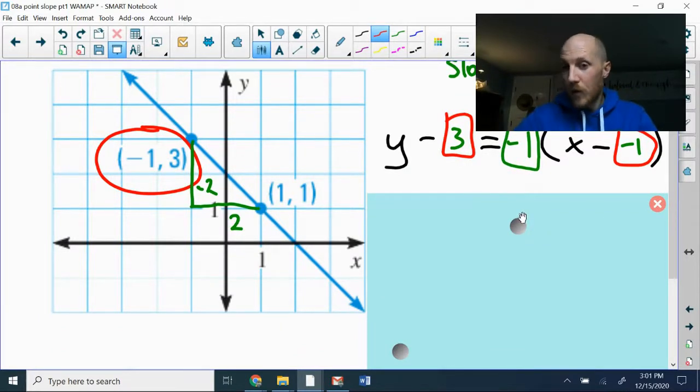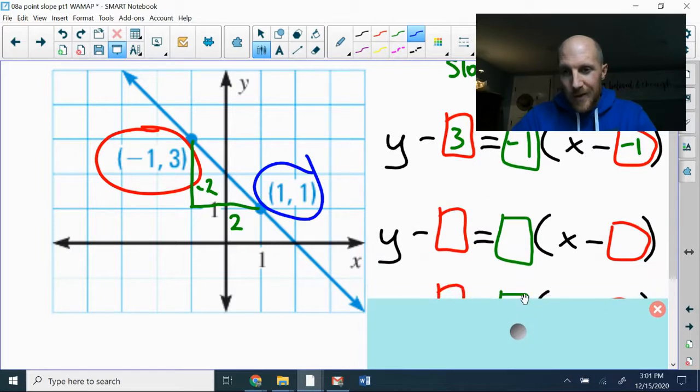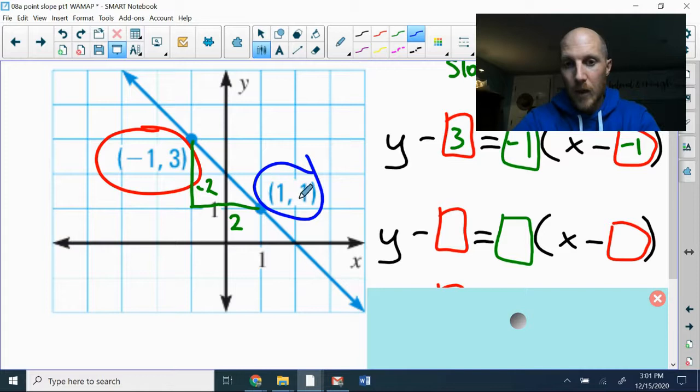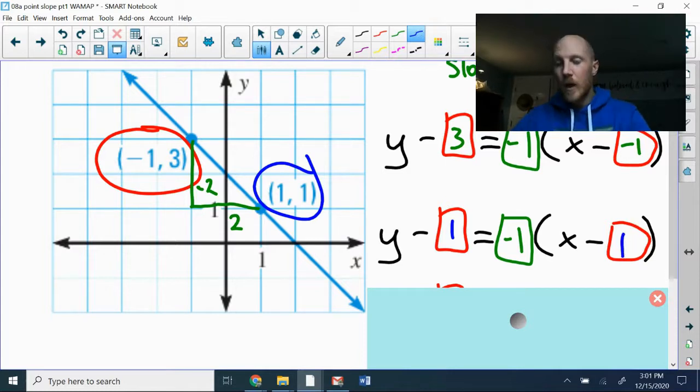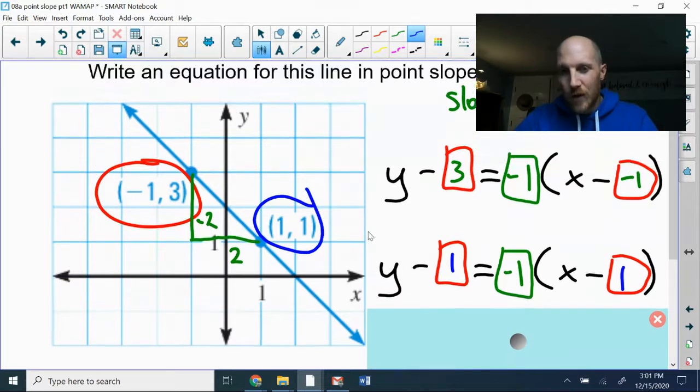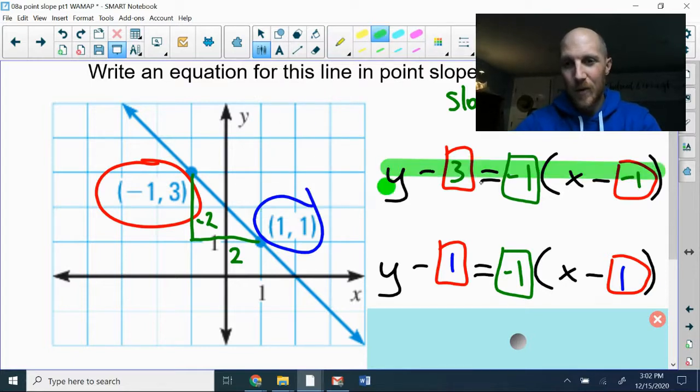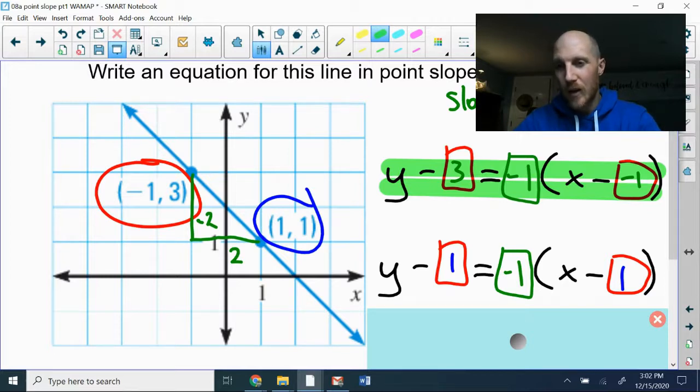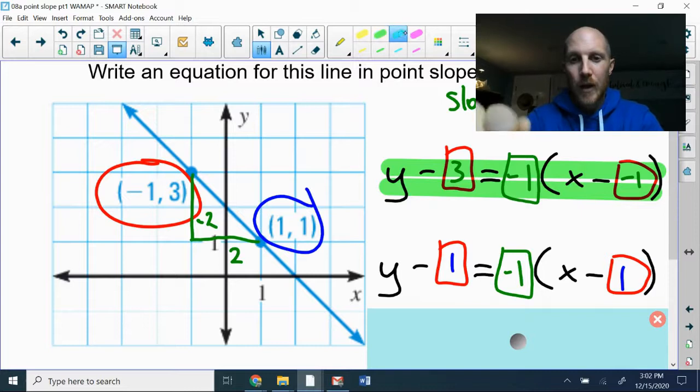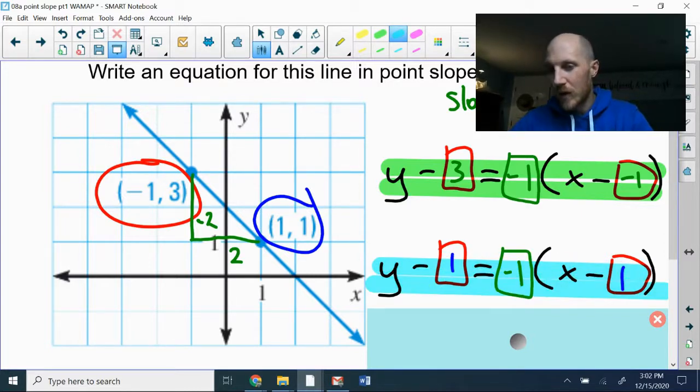What if the other part of the class said we should use (1, 1), what would happen? The y-coordinate is 1, so I'll put a 1 here. Slope is still negative 1, and my x-coordinate also is positive 1. Now this has an interesting phenomenon where part of the class has one answer, and part has a different answer, and that's not supposed to happen. Some people got y-3 equals negative 1, parentheses, x minus negative 1. Others got y-1 equals negative 1, parentheses, x minus 1.